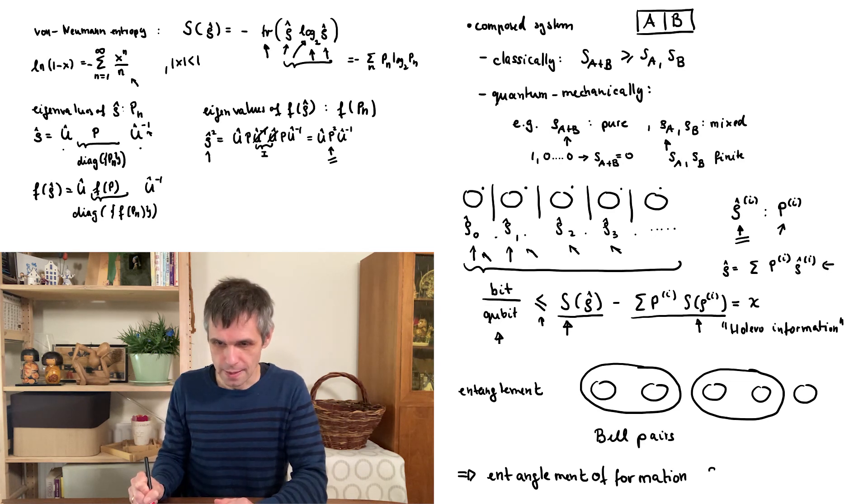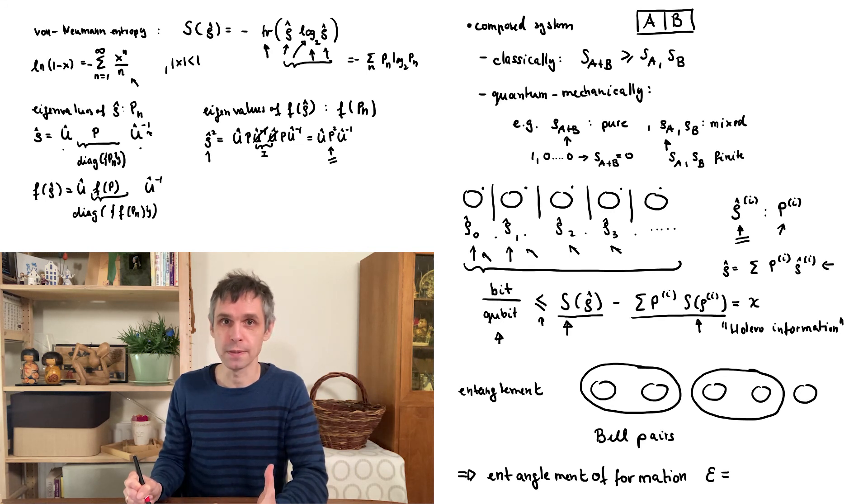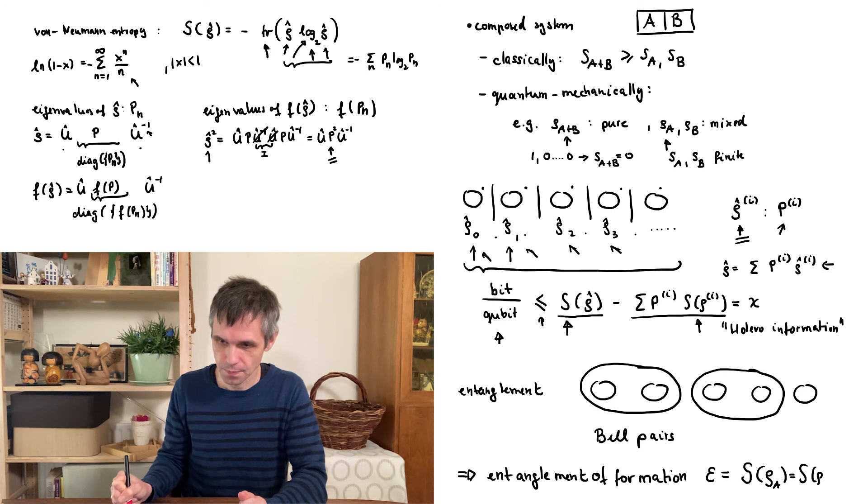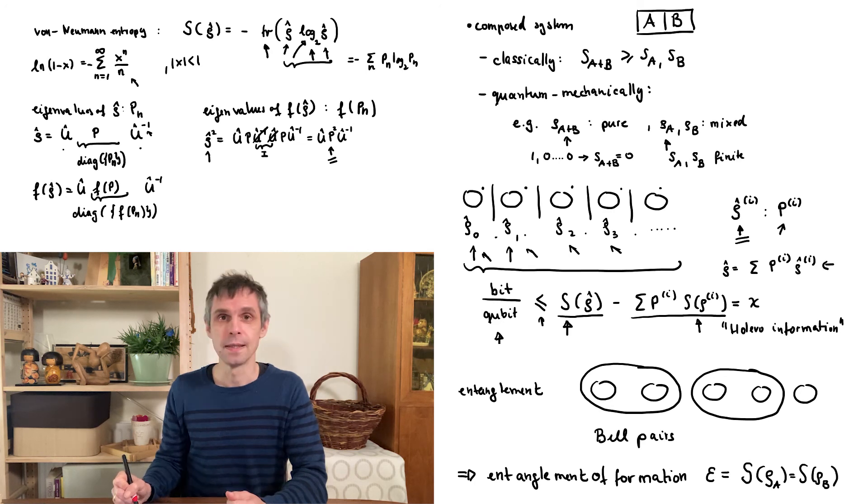We denote this as epsilon. And now for the special case of a composed system made out of two quantum bits and the composed system being in a pure state, this is again given by the von Neumann entropy. But now the von Neumann entropy of any of the two quantum bits. This can again be generalized to two quantum bits in mixed states, but this already becomes quite a bit more complicated. And for the case of quantum systems with more internal states or a composed system with more components, we know the answer for only a few special cases.